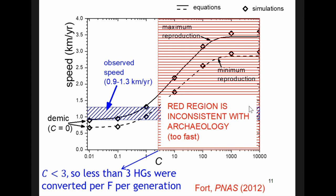What does this mean? That these speeds are too fast to be consistent with archaeology. So, archaeology says that at most, C was about 3. It cannot be more than 3, because then there would be too many hunter-gatherers becoming farmers, and the spread rate would be faster than the observed one. So, the interpretation of this is that less than three hunter-gatherers were converted by each farmer per generation.